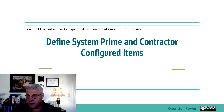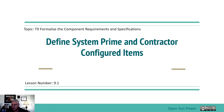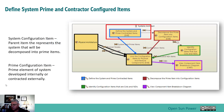Welcome back to the course Introduction to Capella. In this section, we're going to talk about defining the system prime and contractor configured items. They are going to be the major items in the system. The system configuration item is the parent item that represents a system that will be decomposed into prime items. The prime configuration items are prime elements of the system developed internally or contracted externally. They're made up of hardware configuration items, software configuration items, and also COTS and NDIs — non-developed items.